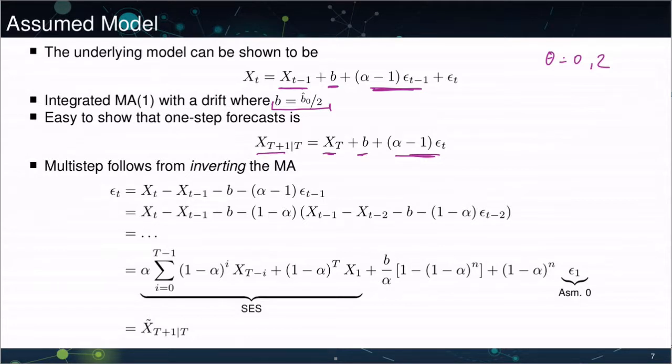One can actually get the multi-step forecast by inverting the moving average like we saw before. So I simply know that epsilon t is Xt minus Xt minus 1 minus b minus alpha minus 1 epsilon t minus 1. I can sub in for epsilon t minus 1, which I solved backwards and just plug that in.